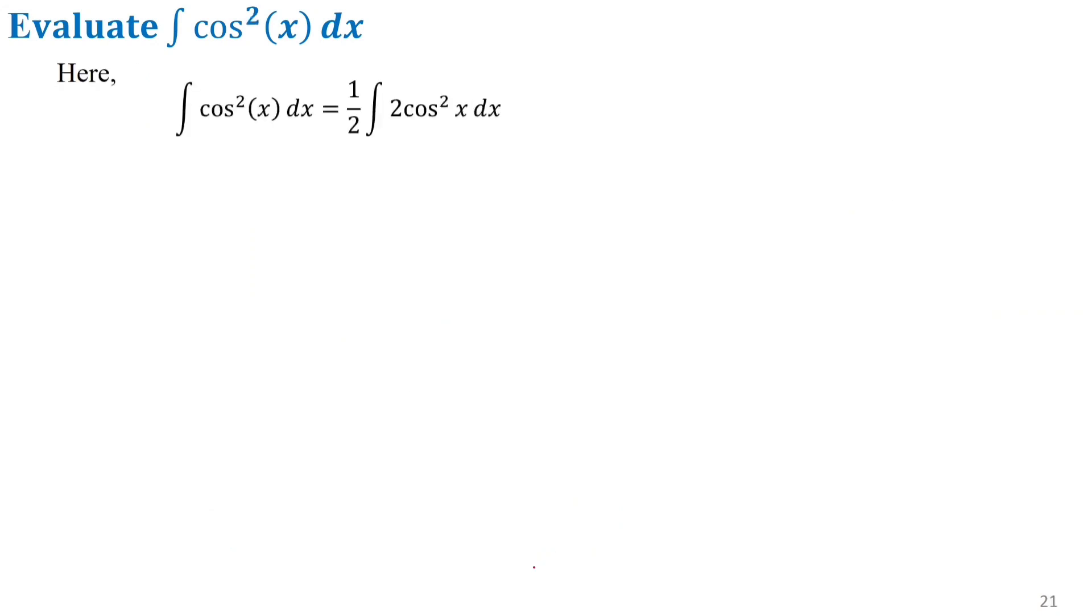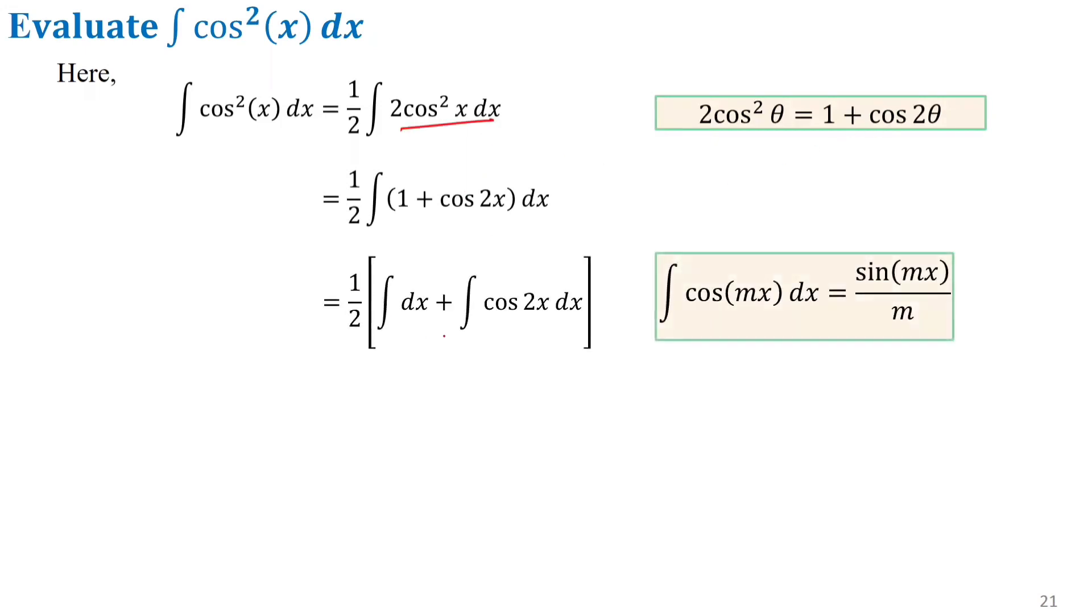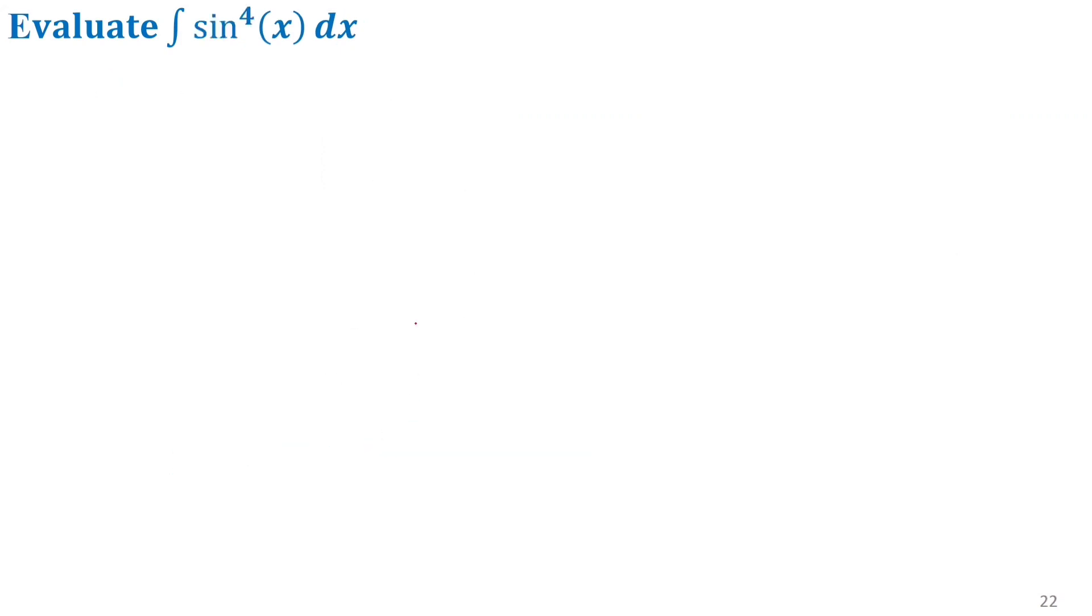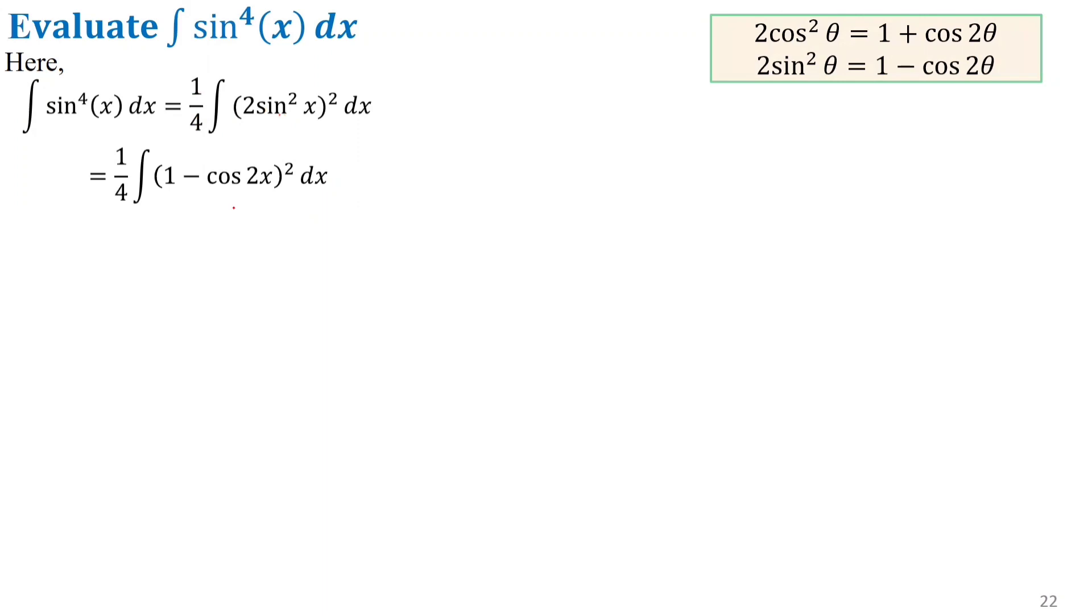For the integral of sin to the fourth power of x, we need to use trigonometric identities. Since sin squared x can be written as one half times (1 minus cosine 2x), we can apply this identity to simplify the integration of sin to the fourth x.